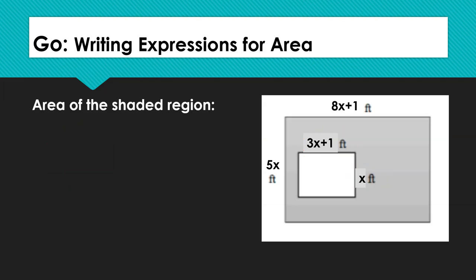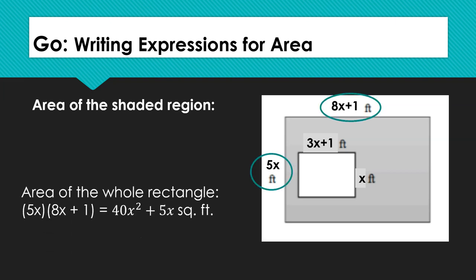In the Go section, you are finding the area of the shaded region for each of the given shapes. Let's look at an example. We have a shaded rectangle with dimensions 8x plus 1 by 5x, with a smaller rectangle inside with dimensions 3x plus 1 by x. First we need to find the area of the entire shaded rectangle by multiplying its length 5x by its width 8x plus 1. Using the distributive property, we will find that the area of the shaded rectangle is 40x squared plus 5x.